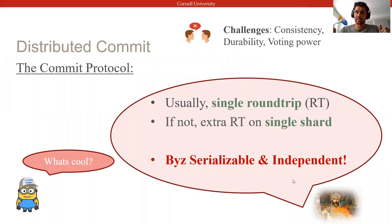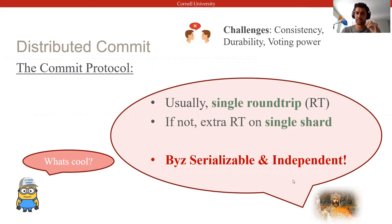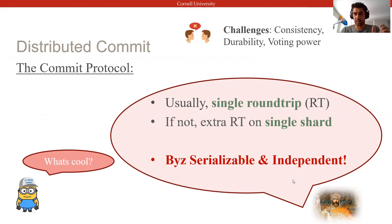One of my favorite insights on durability is that, unlike state machine replication protocols, we only need to persist the commit decision on a single shard, no matter how many shards are involved in the execution. The commit protocol also ensures that Byzantine serializability is upheld, and is designed so that neither clients nor groups of Byzantine replicas can dictate the outcome.